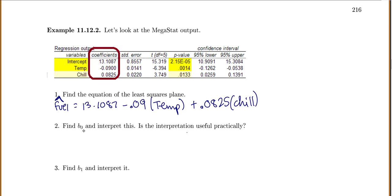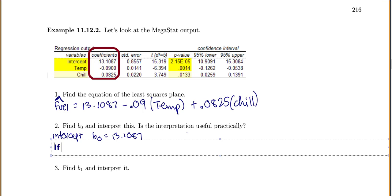So let's find b0 and interpret it. This is our intercept. So b0 equals this 13.1087. So this means if temperature equals 0 and chill equals 0, we predict a fuel consumption of 13.1087.